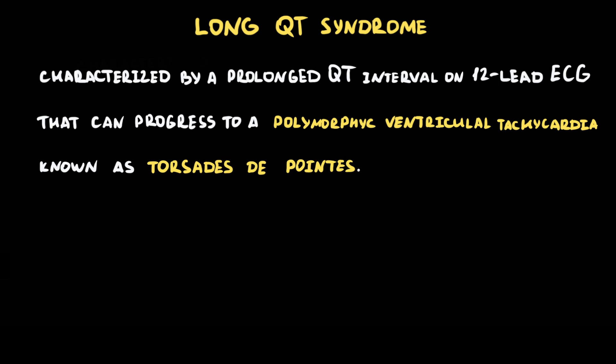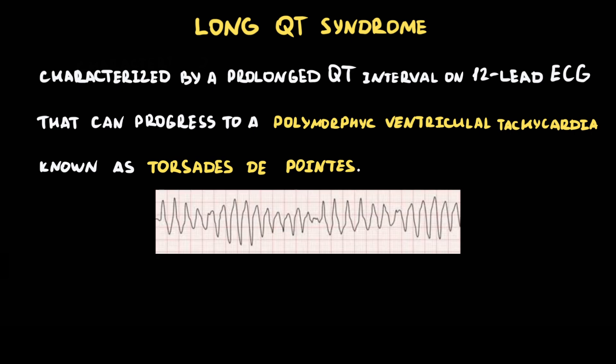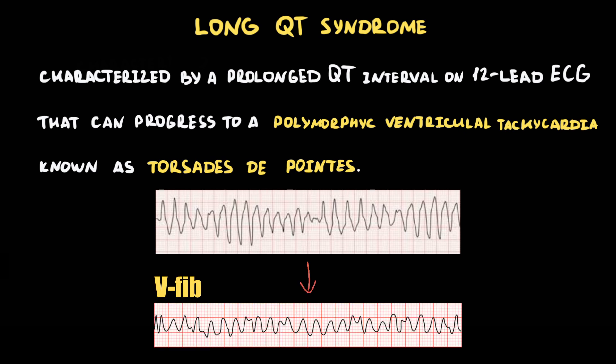Long QT syndrome is characterized by a prolonged QT interval on 12-lead ECG that can induce a polymorphic ventricular tachycardia known as torsades de pointes, which in turn can progress to ventricular fibrillation. Clinically, torsades de pointes can produce syncope or even sudden cardiac death.